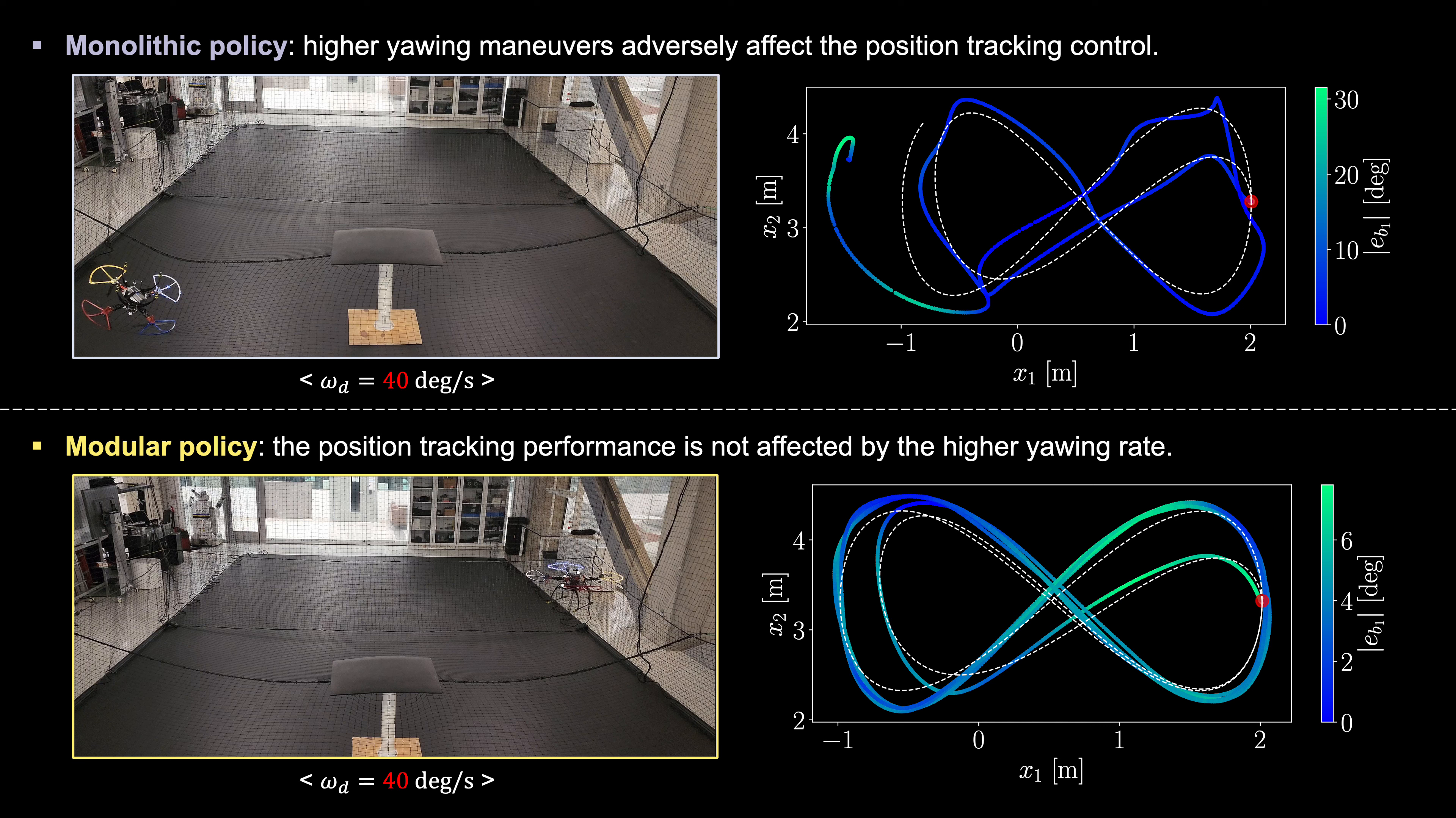In conclusion, our modular reinforcement learning framework greatly improves quadrotor control by decoupling the translational and yawing components. This not only accelerates the learning process, but also ensures more stable and precise control even at higher yaw rates. Thank you for your attention, and please feel free to contact us if you have any questions.